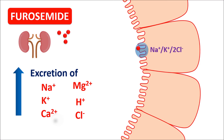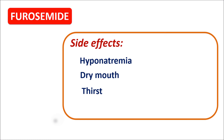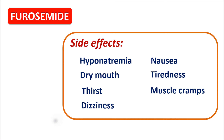Because of long-term treatment with furosemide, important side effects can occur. This drug can produce hyponatremia — loss of sodium — along with dehydration. Patients may experience dry mouth, increased thirst, dizziness, nausea, and tiredness. It can also produce muscle cramps and palpitations. All these side effects are due to dehydration and loss of minerals.